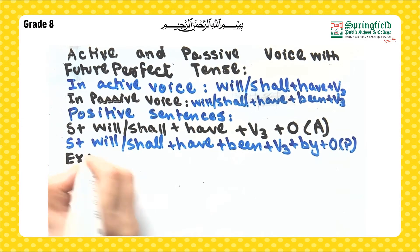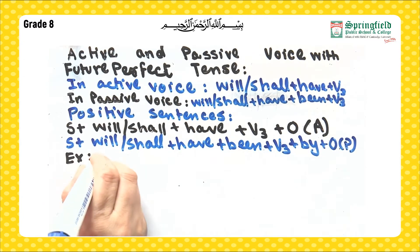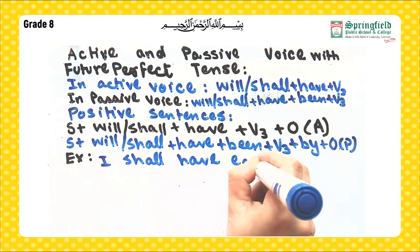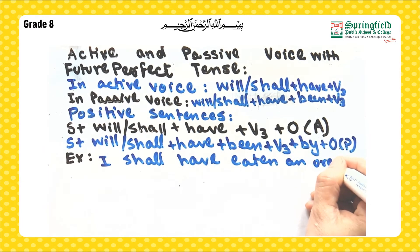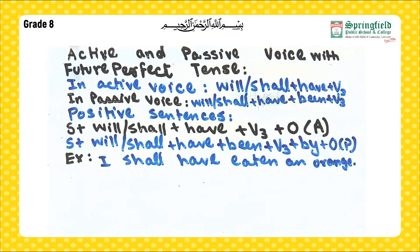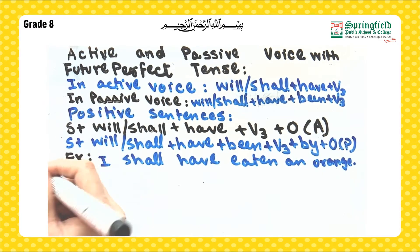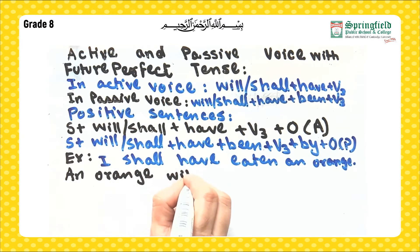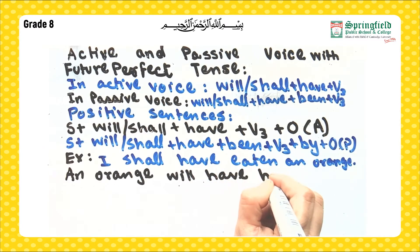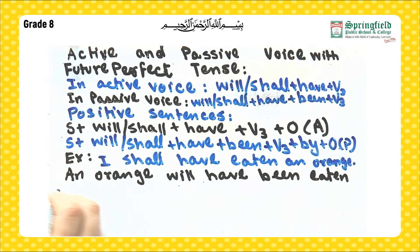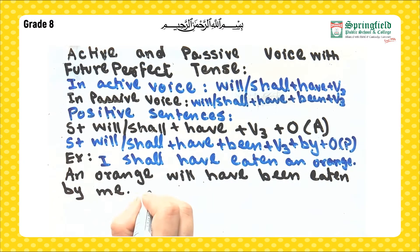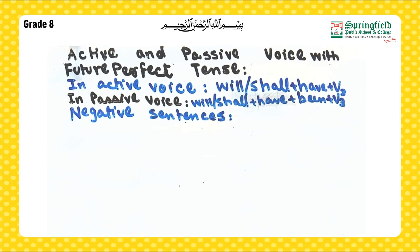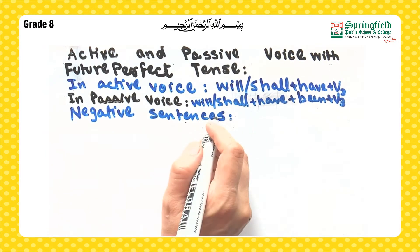Now let's have an example. The sentence is: 'I shall have eaten an orange' — this is in active voice. When we change it into passive voice, it becomes: 'An orange shall have been eaten by me.'